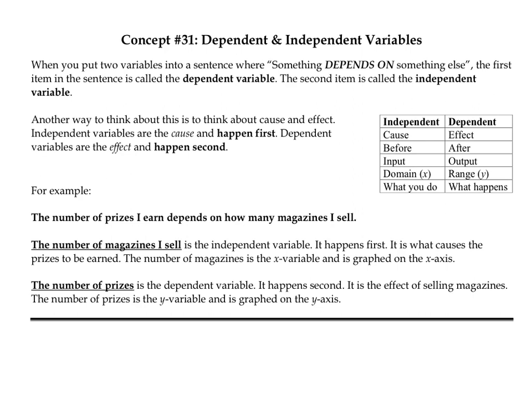Independent and dependent variables — there are a couple of ways you can decide which one is independent and which one is dependent. One statement I often use: something will typically depend on something else, so you could put it in a statement — whatever depends on whatever. The dependent variable will always depend on the independent variable.